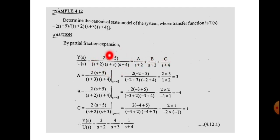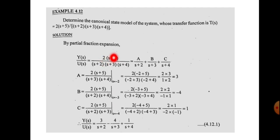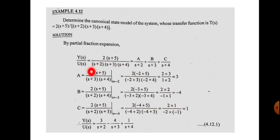A is found by multiplying by (s+2) and evaluating at s = -2: A = 2(s+5)/[(s+3)(s+4)] at s=-2, giving A = 3. Similarly, B is found by multiplying by (s+3) at s = -3: B = 2(s+5)/[(s+2)(s+4)] at s=-3, giving B = -4. For C, multiplying by (s+4) at s = -4: C = 2(s+5)/[(s+2)(s+3)] at s=-4, giving C = 1. So Y(s)/U(s) = 3/(s+2) - 4/(s+3) + 1/(s+4).